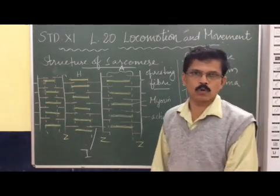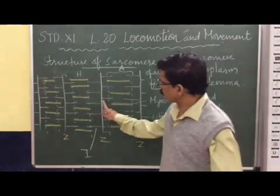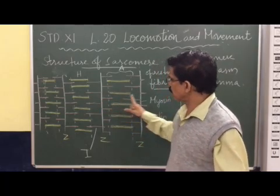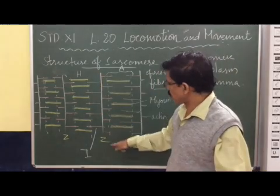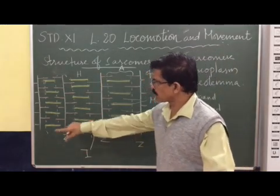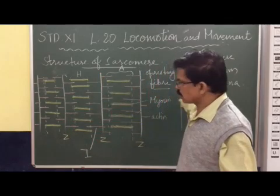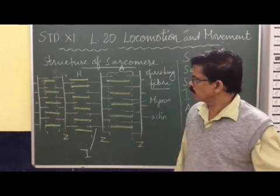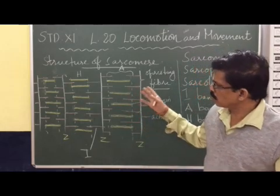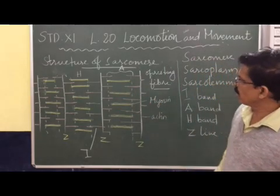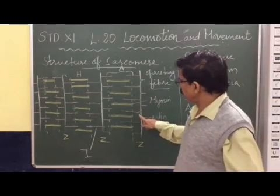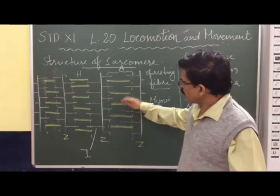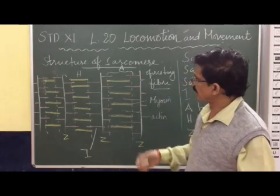A sarcomere is represented between two Z-lines. This is one sarcomere, this is another sarcomere — like this, sarcomeres are connected one after another. A large number of sarcomeres are connected one after another and form a continuous banded structure. The sarcomere contains both the actin thin filament and the myosin filament arranged in different patterns.